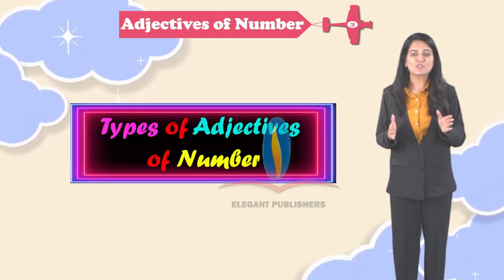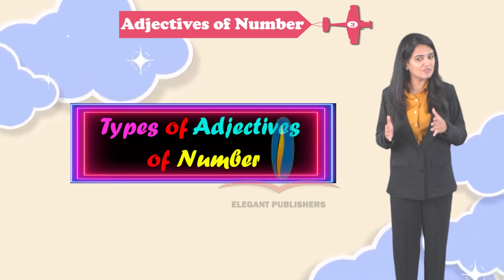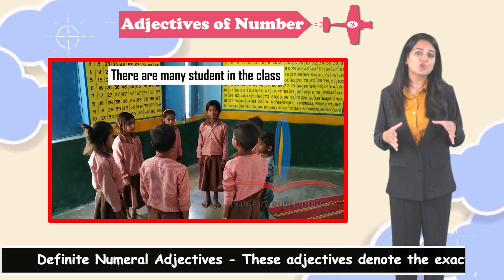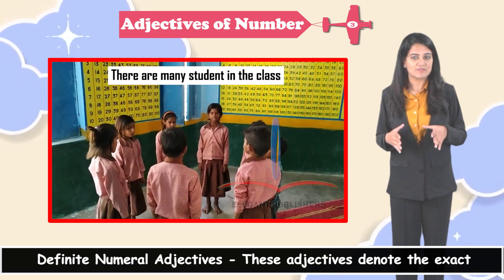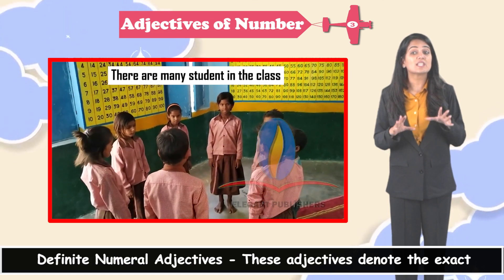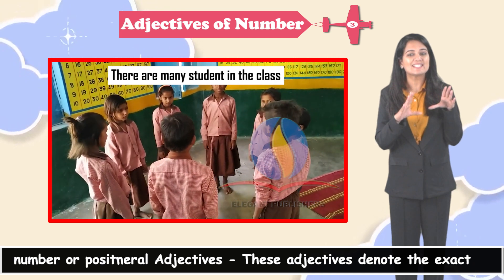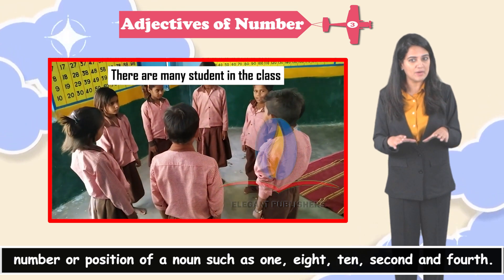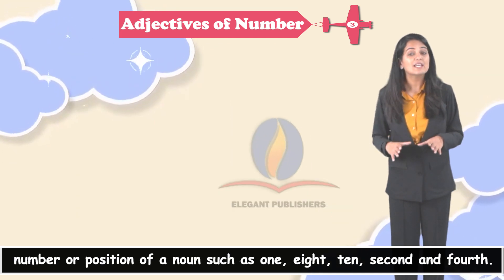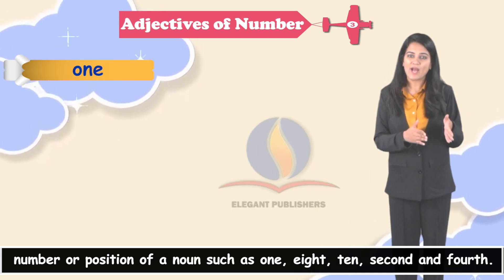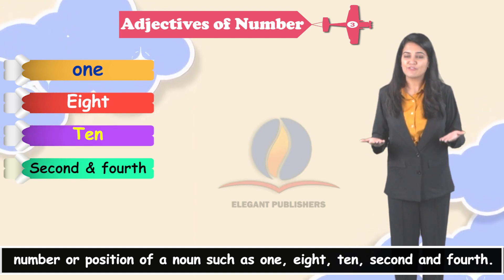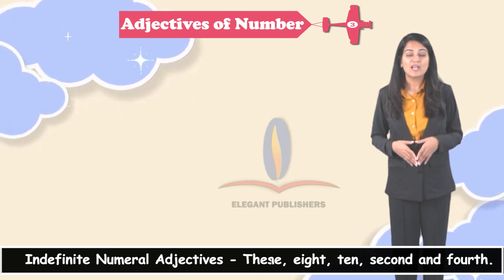Types of adjectives of number: Definite numeral adjectives — these adjectives denote the exact number or position of a noun, such as 1, 8, 10, 2nd, and 4th.